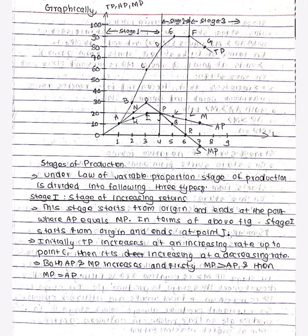Now we plot the points in the graph from the table. We divide the graph into stages: step first, step second, step third. We plot the graph and explain the numbers. The y-axis includes TP, AP, and MP.